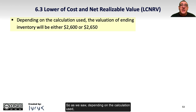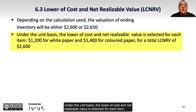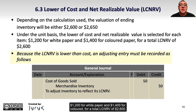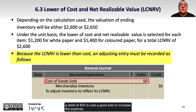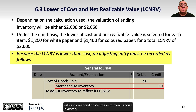So as we saw, depending on the calculation used, the value of any inventory will either be $2,600 or $2,650. Under the unit basis, the lower of cost and net realizable value is selected for each item: $1,200 for white paper and $1,400 for colored paper, for a total LCNRV of $2,600. Because the LCNRV is lower than cost, an adjusting entry must be recorded with a debit of $50 to cost of goods sold to increase the expense, with a corresponding decrease to merchandise inventory to lower the inventory value on the balance sheet.